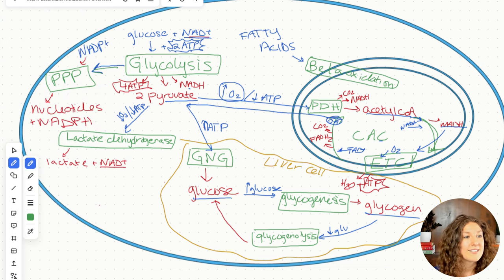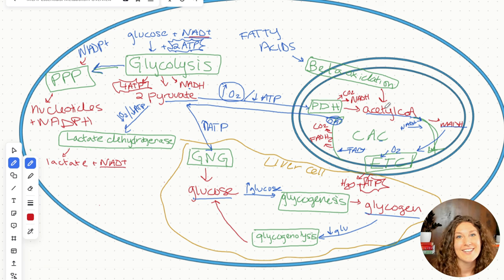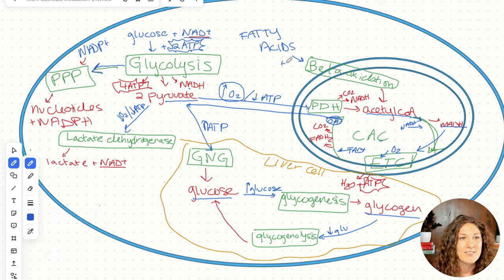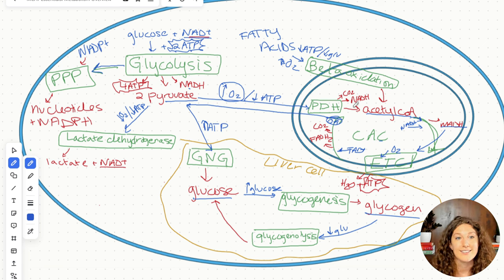Fatty acids come in and acetyl-CoA is produced. From there, that acetyl-CoA goes right into the citric acid cycle and the electron transport chain, as long as there's oxygen so we can produce ATP. Beta-oxidation requires oxygen, and it happens when we need energy — low ATP — and we also do not have glucose.